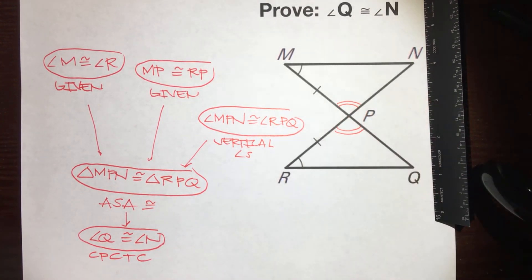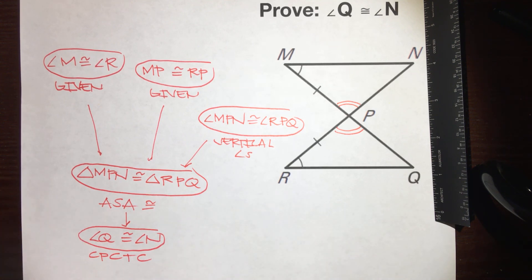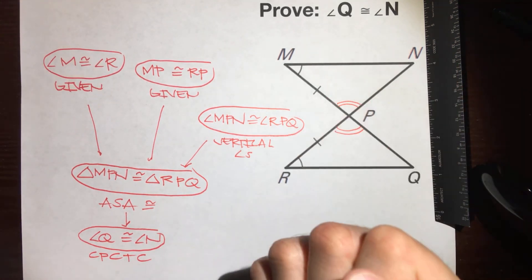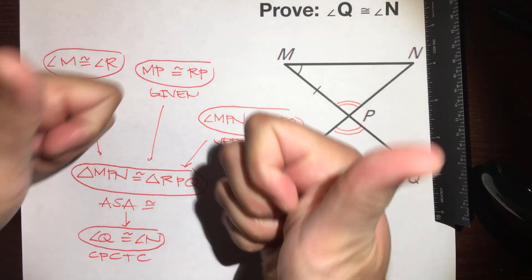Alright, there you go. That's how you use CPCTC — corresponding parts of congruent triangles are congruent. Have a great day.